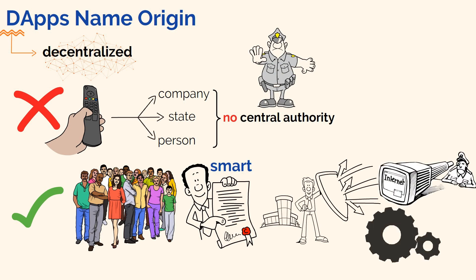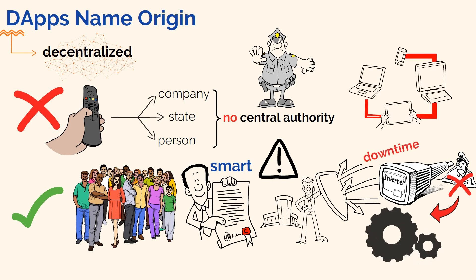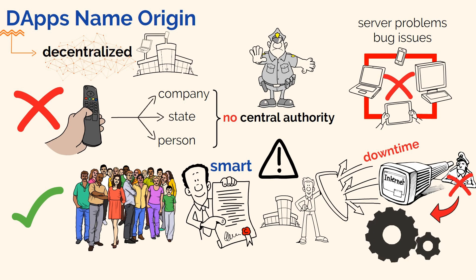Because they're autonomous, nobody can intervene in the way they operate. Another important thing to note about dApps is that they're seriously downtime resistant. Unlike centralized apps that can often face bug issues or server problems due to failures in the central entities that control them, dApps are run across hundreds or even thousands of decentralized computers.